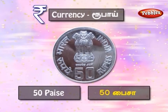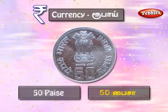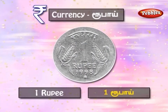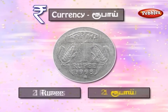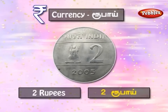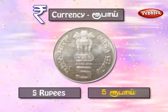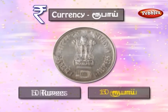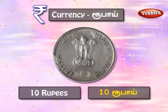50 paise and 50 paise make 1 rupee. 1 rupee — 1 Rubai. 2 rupees — 2 Rubai. 5 rupees — 5 Rubai. 10 rupees — 10 Rubai.